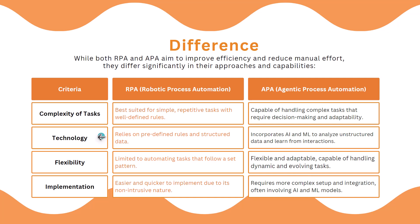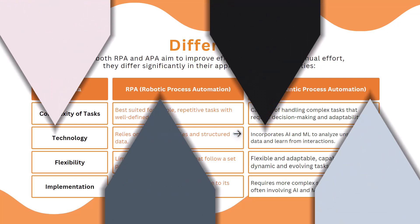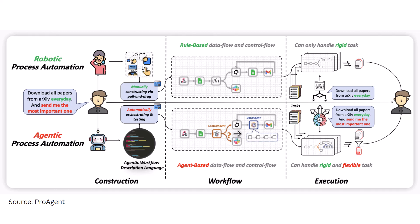These are four criteria we considered for comparing RPA and APA. I found a workflow diagram from the Pro Agent GitHub repository that demonstrates Robotic Process Automation versus Agentic Process Automation. The example task is: download all papers from some website every day and send me the important ones. If you perform this task based on RPA versus APA, what will be the result and how much adaptability and decision making can be applied?